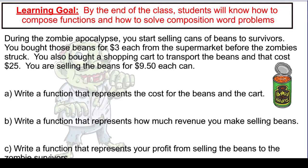Then the zombie apocalypse strikes and you have all of this food, and everybody else needs food. You say you're going to sell these cans of beans to people for $9.50 for each can. What we want to do is write a function representing all of your costs, another function for revenue — how much money you made selling the beans — and then a function representing profit.